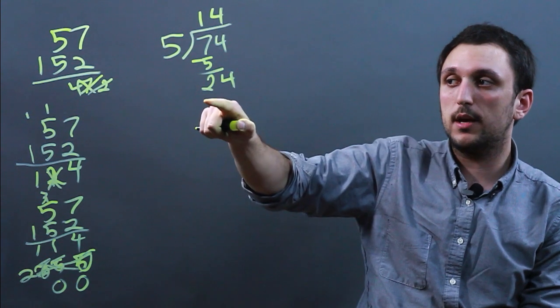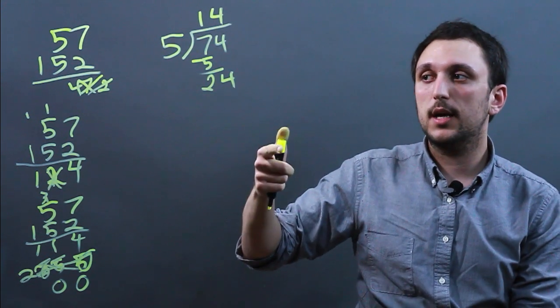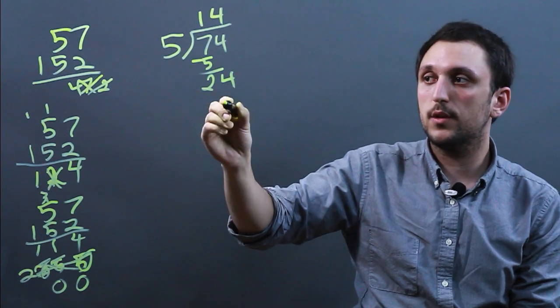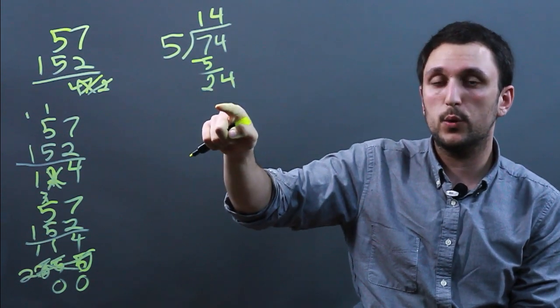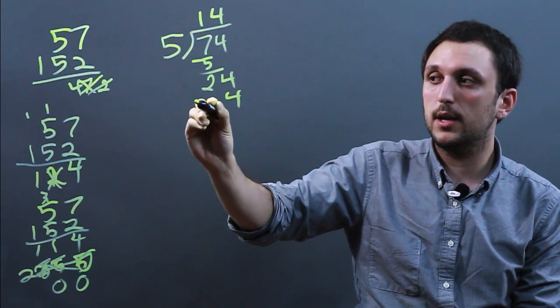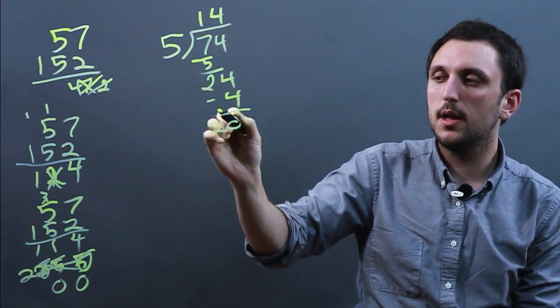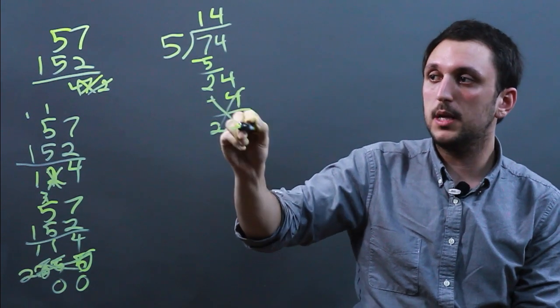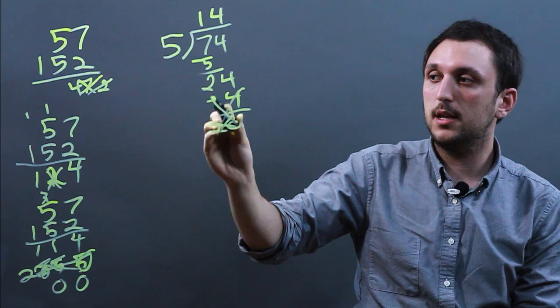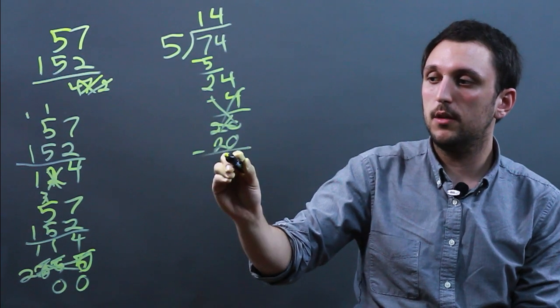And here we would say subtract 20. But let's say you forgot and you said, because the difference between 24 and 20 is 4, so maybe you say 24 minus 4 is 20, and that's incorrect. It should be 24 minus 20 is 4.